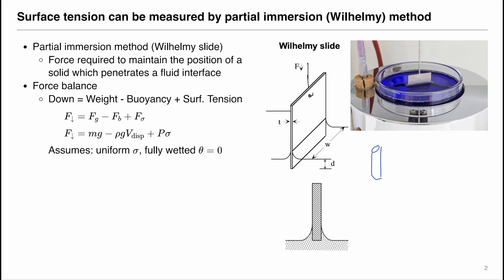Using the partial immersion method, we can determine the surface tension by solving for sigma, which is equal to the downward force minus the gravitational force minus the buoyancy force, divided by the wetted perimeter.